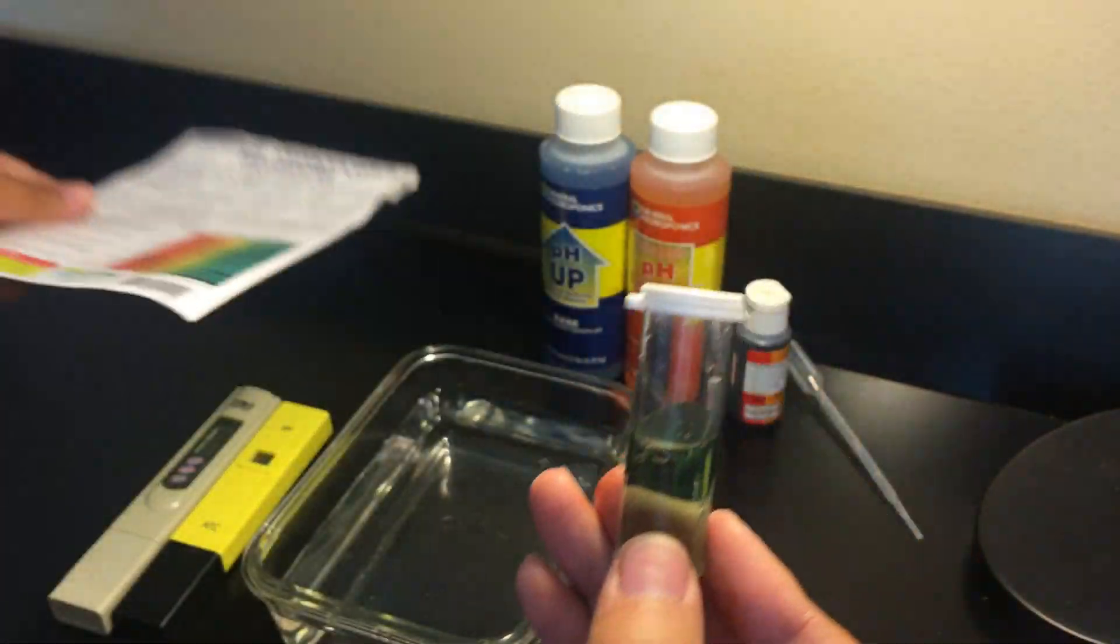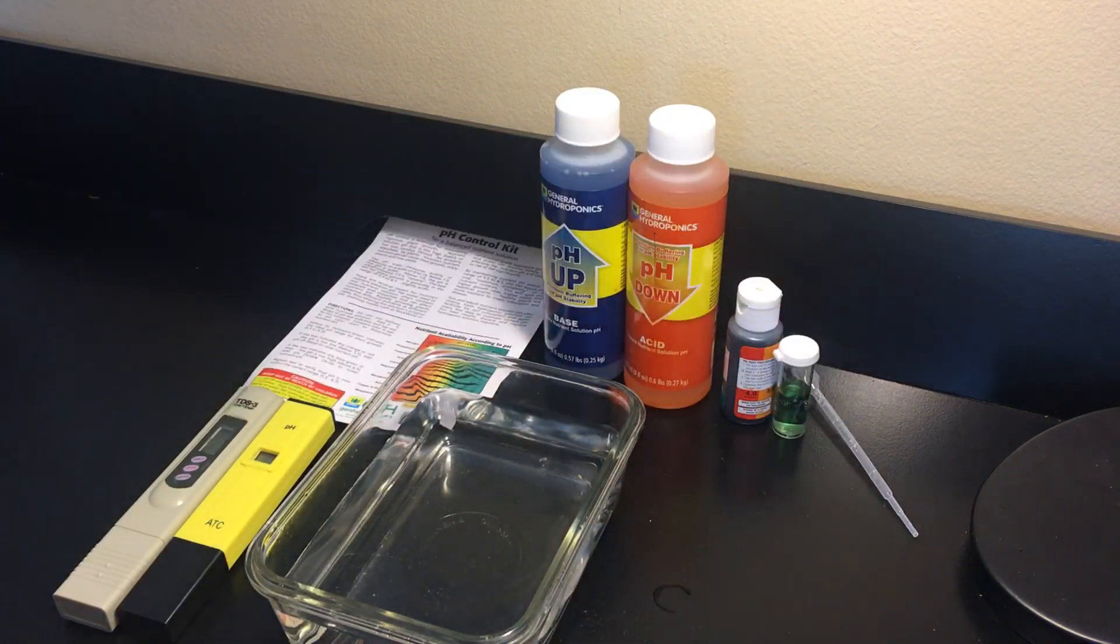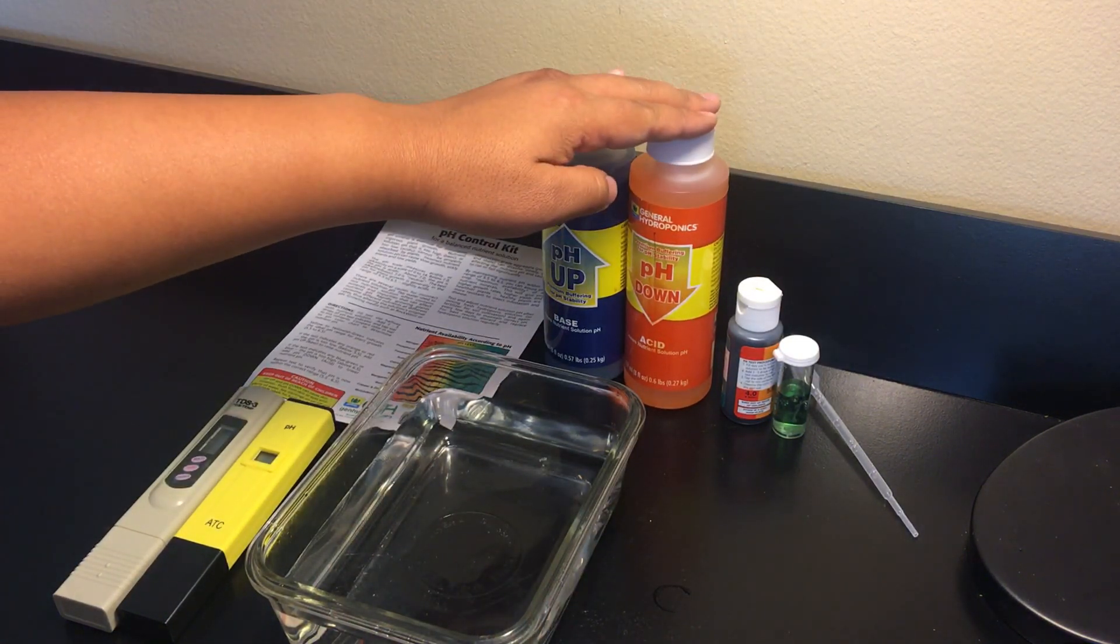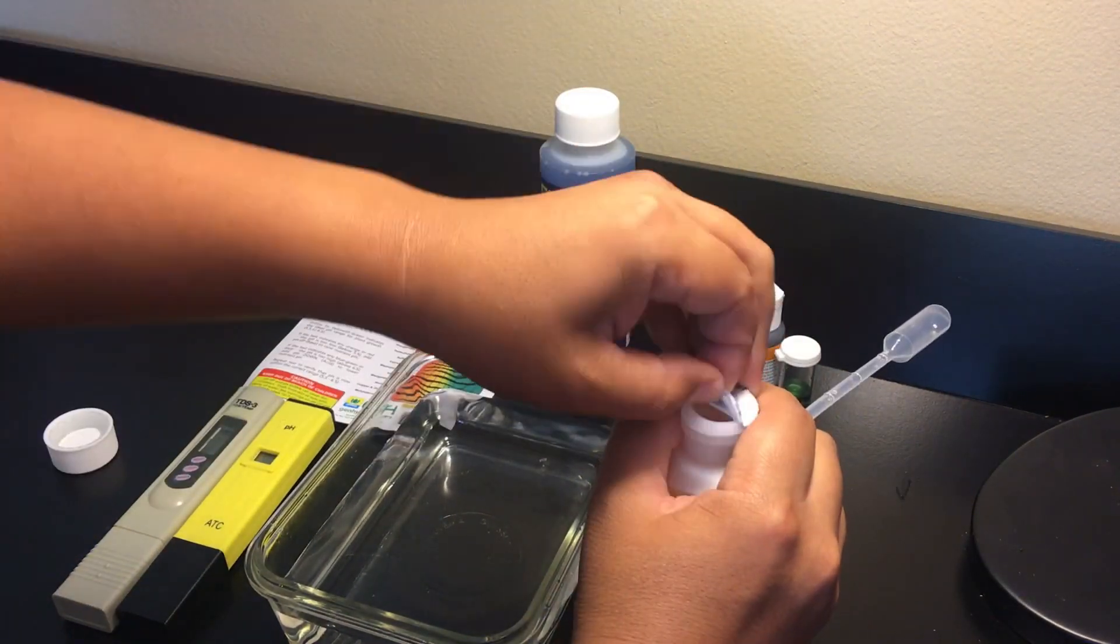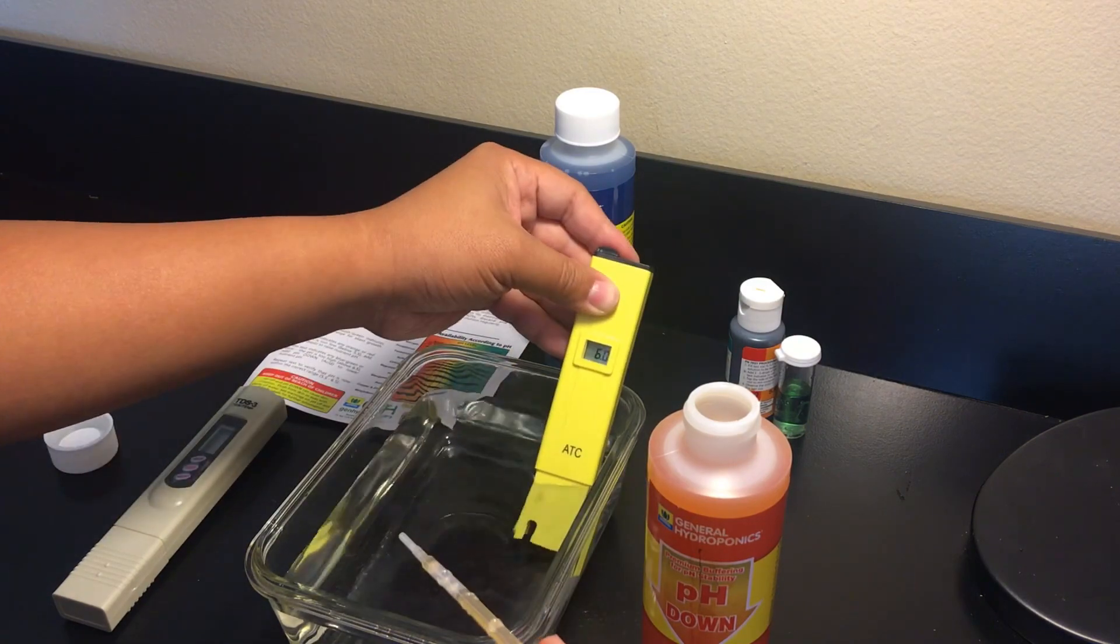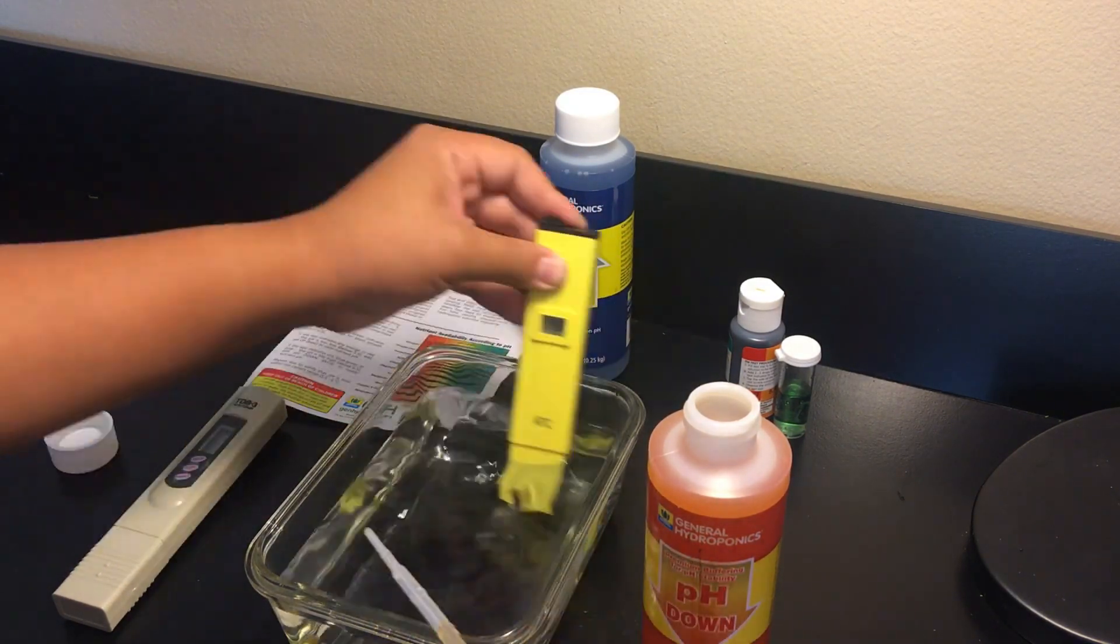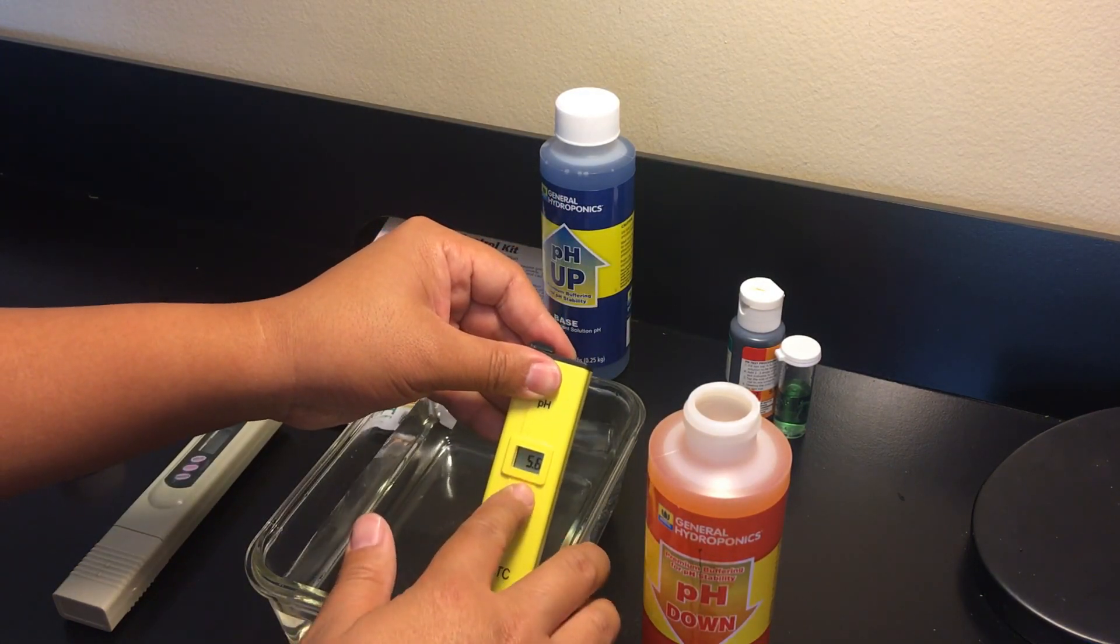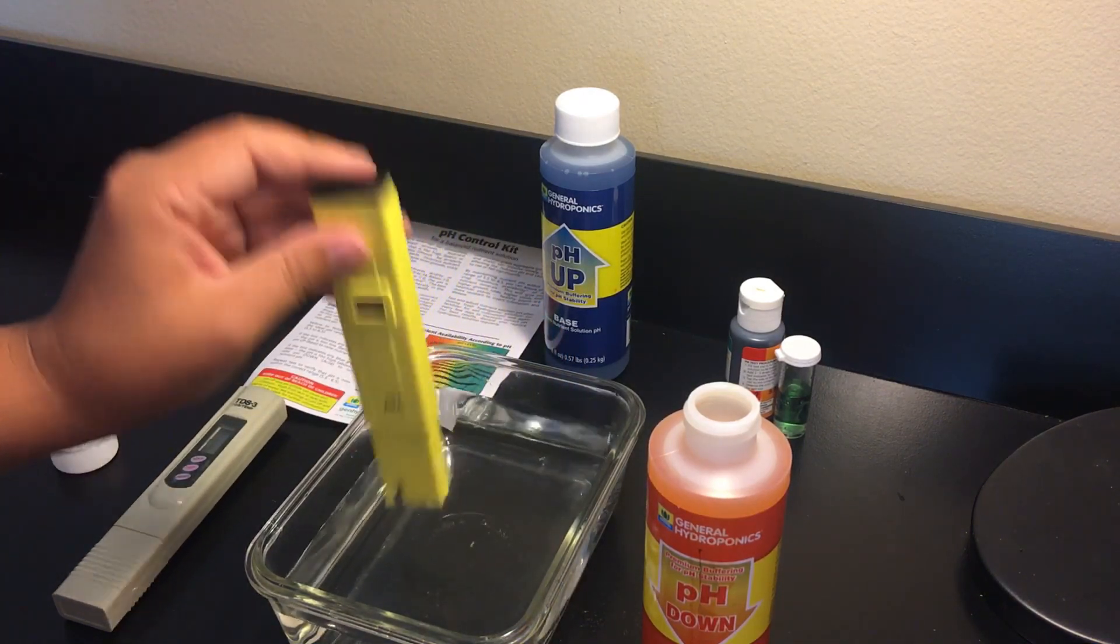Now if I want to adjust the pH, let's say lower to 5.5, all I would need to do is add something acidic. Around the house I could use vinegar or just put a little money down and buy a pH down bottle. I'll slowly add a few drops at a time while stirring the water to get an accurate reading. And now that the water is 5.5, it's good to go for something like soaking rock-wool cubes in.